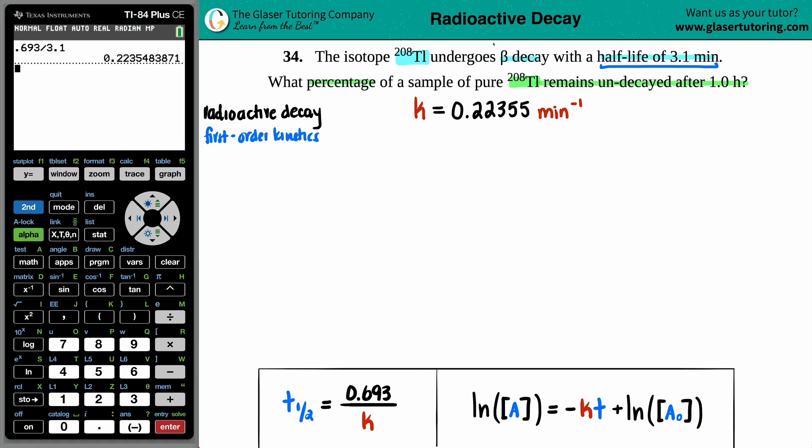Now, the actual question here is asking for what's the percentage of that sample that is remaining. And it's going to remain, it's going to be undecayed. We want to find out a percentage, so that means that we want to find out an amount. Now, when you want to find out an amount for your first-order kinetics, always use this formula.